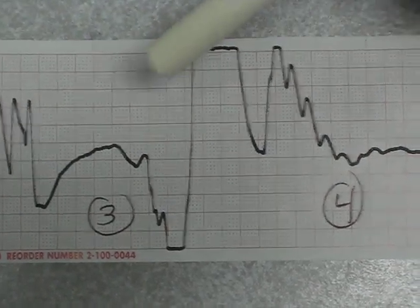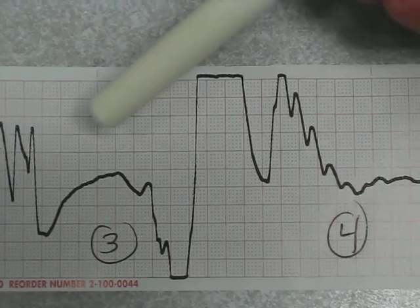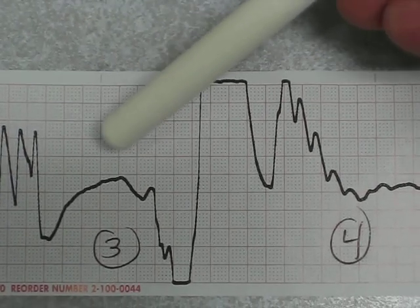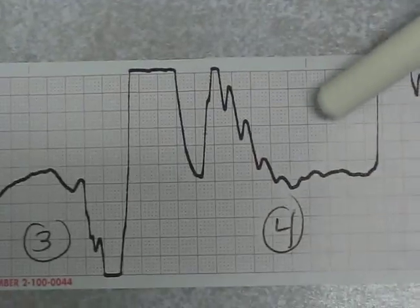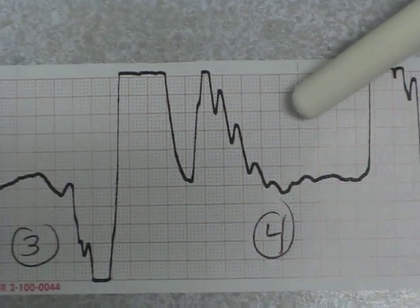So this 29 year old female has two types of thoracic outlet, partly the hyperabduction here at three and also from costoclavicular syndrome at position number four.